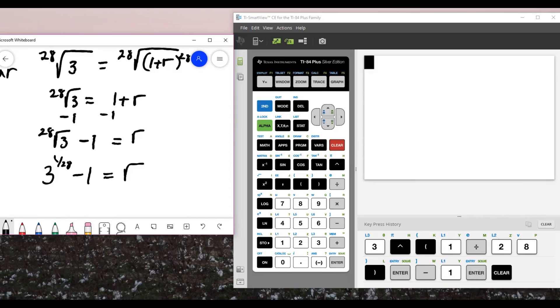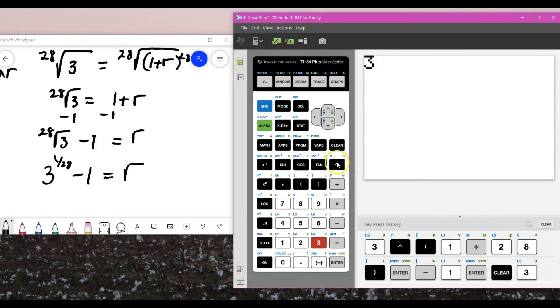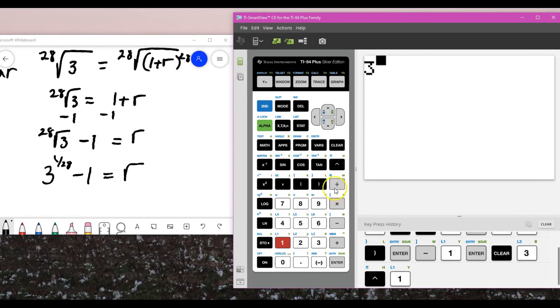So you can write radical expressions as exponents. So I have 3 to the 1 over 28 power minus 1.